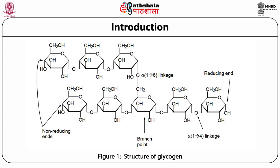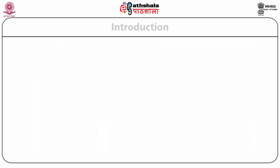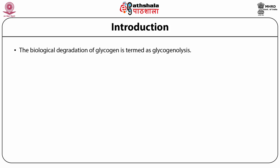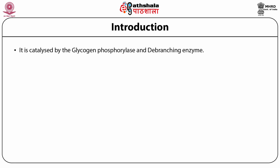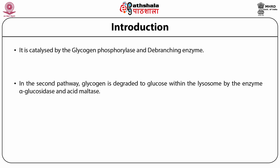Glycogen is a branched polymer of glucose with alpha 1-4 glycosidic linkage along the main chain, while the alpha 1-6 glycosidic bond occurs at branching points at almost every 10 residues. The biological degradation of glycogen is termed glycogenolysis. It is catalyzed by glycogen phosphorylase and debranching enzyme. In the second pathway, glycogen is degraded to glucose within the lysosome by the enzyme alpha-glucosidase and acid maltase.